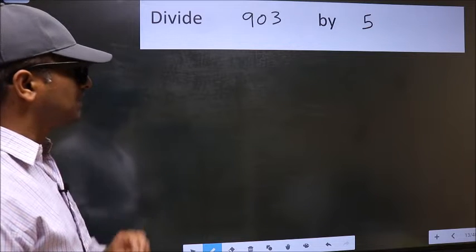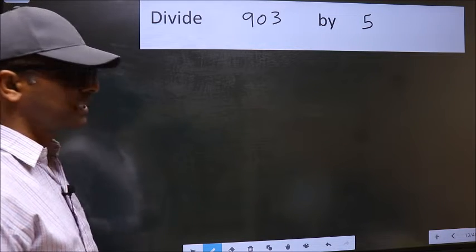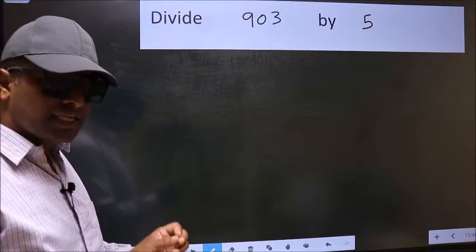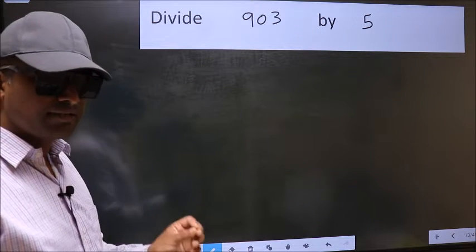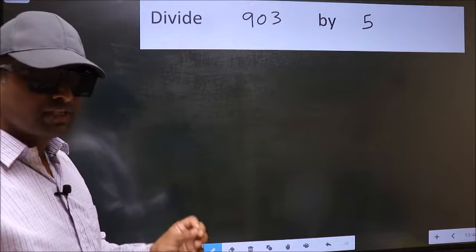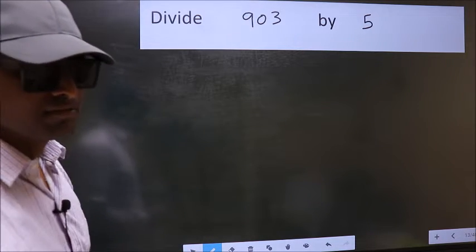Divide 903 by 5. While doing this division, many do this mistake. What is the mistake that they do? I will let you know. But before that, we should frame it in this way.